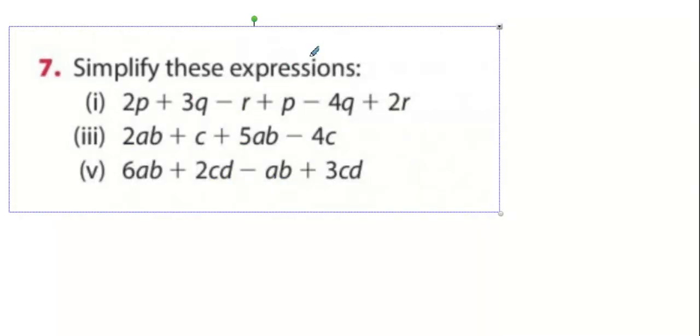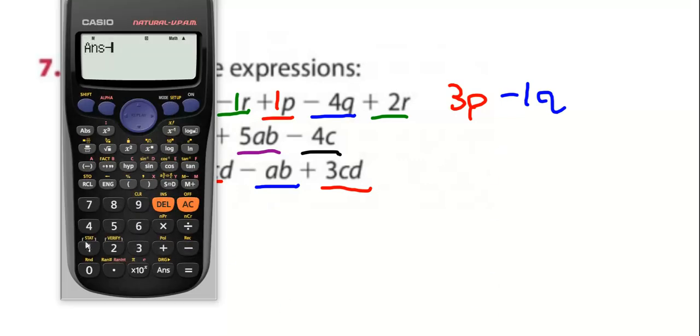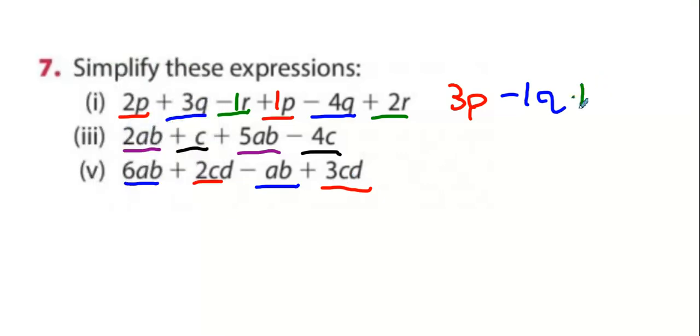All right guys. You guys are going to try these two questions now yourselves. We simplify these expressions. There's three different items. There's P's, which is two plus two plus one is three P. Then there's Q's, which is three take away four, minus one Q. And then there's R's, which is minus one plus two, one R.